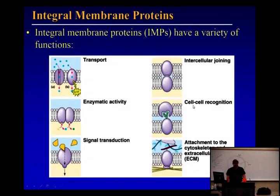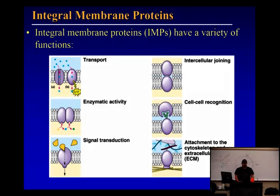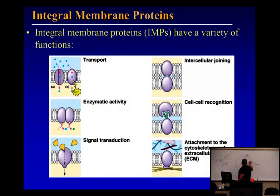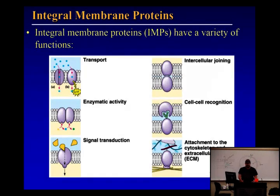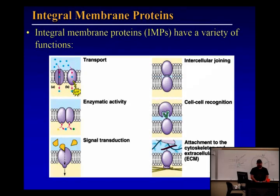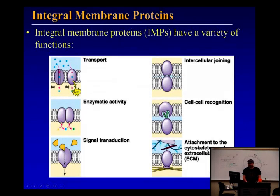Integral membrane proteins are also involved in cell-to-cell recognition. Your brain cells, lung cells, and heart cells all stay with their own kind — it's not like the heart cell decides to go check out what the brain is doing, because that would interfere with the brain's function. Those signals on the outside — those glycoproteins and receptors — signal each of the cells to stay with other cells that are like them. And what happens in cancer? The cells lose that cell-to-cell recognition and can move to other tissues — we call that metastasis.